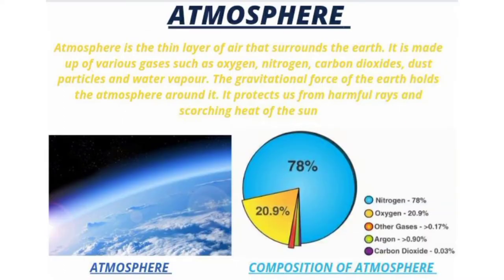Atmosphere. Atmosphere is the thin layer that surrounds the earth. It is made up of various gases such as oxygen, nitrogen, carbon dioxide, dust particles and water vapor. The gravitational force of the earth holds the atmosphere around it. It protects us from harmful rays and scorching heat of the sun.